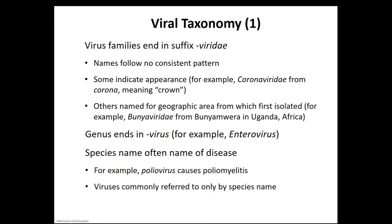Viral taxonomy can be quite complex and revolves around multiple principles. Most viral families end in the suffix 'viridae,' but they really follow no consistent path. Some viruses are named for their appearance — such as coronaviridae, because they look like a crown — or for where they're discovered, such as buniviridae, discovered in Africa. The genus name of a virus typically ends in 'virus,' such as enterovirus. The species name is what we often refer to a particular virus by — for example, poliovirus, named for the disease poliomyelitis. The nomenclature system for viruses is somewhat sporadic.